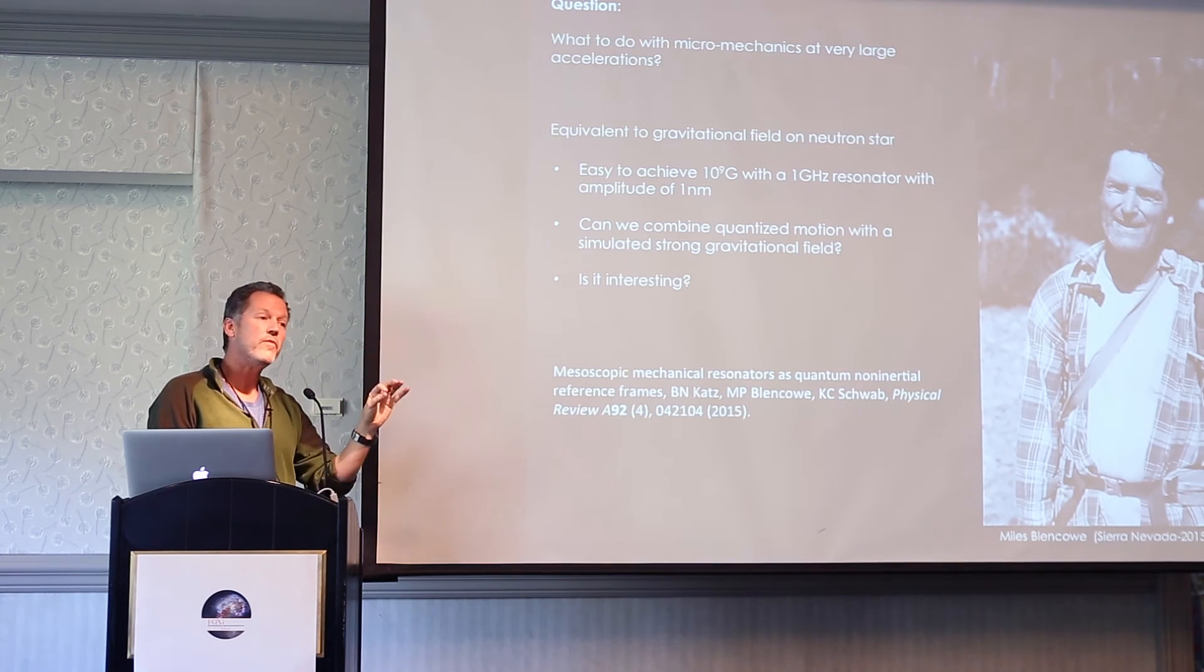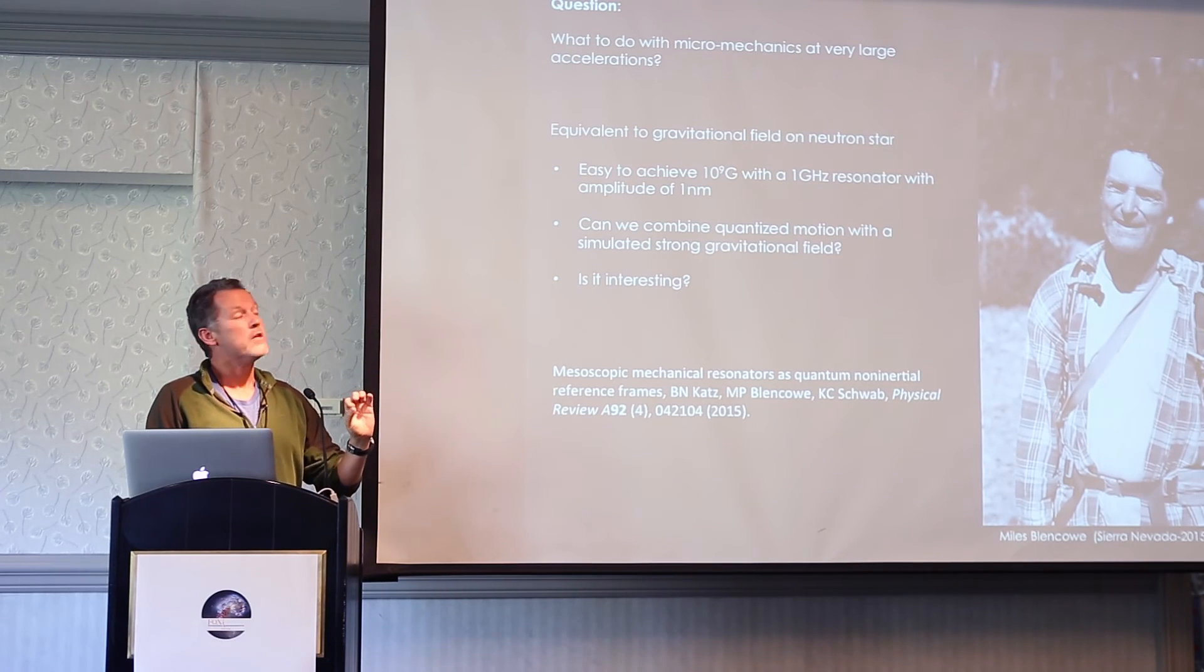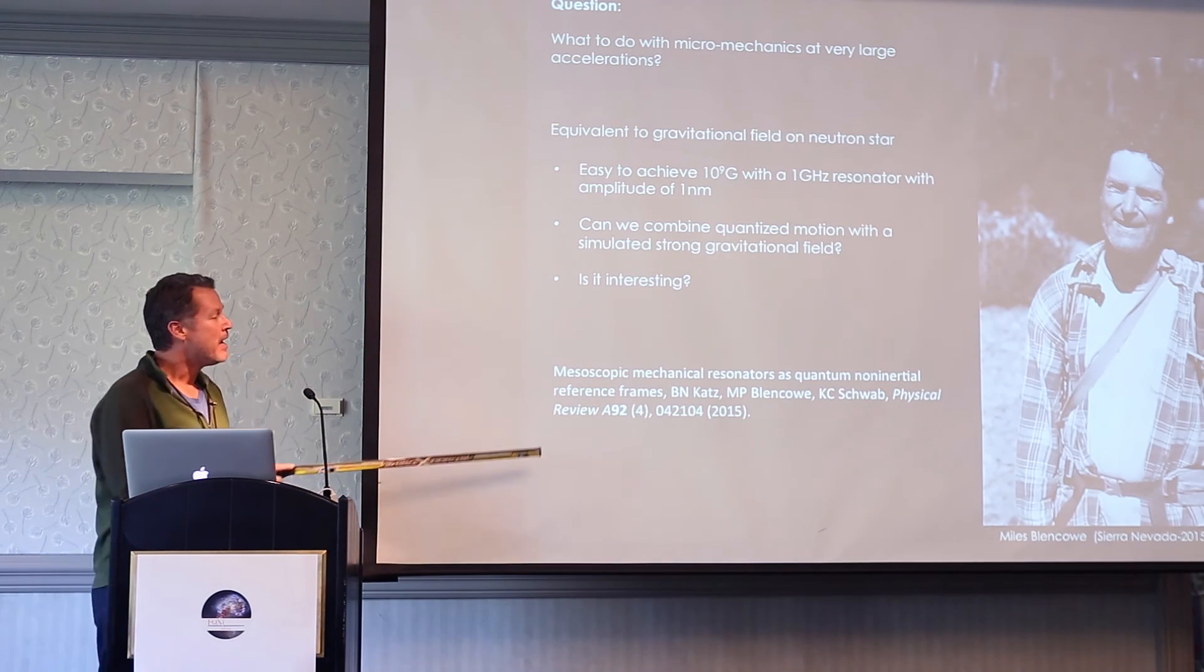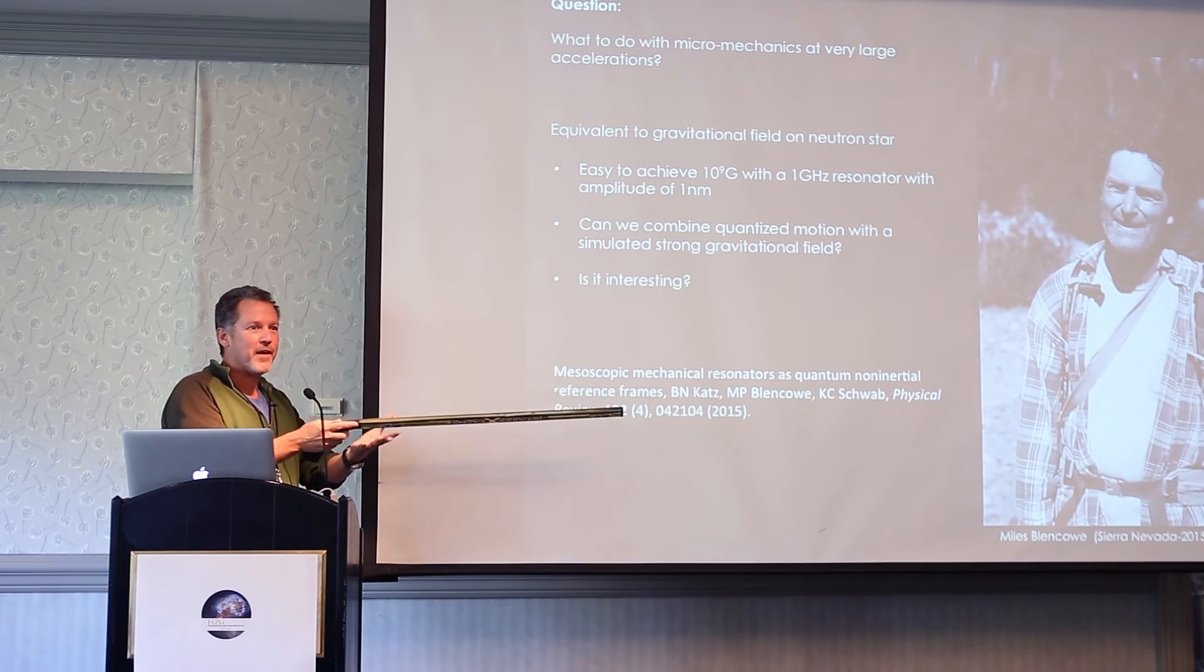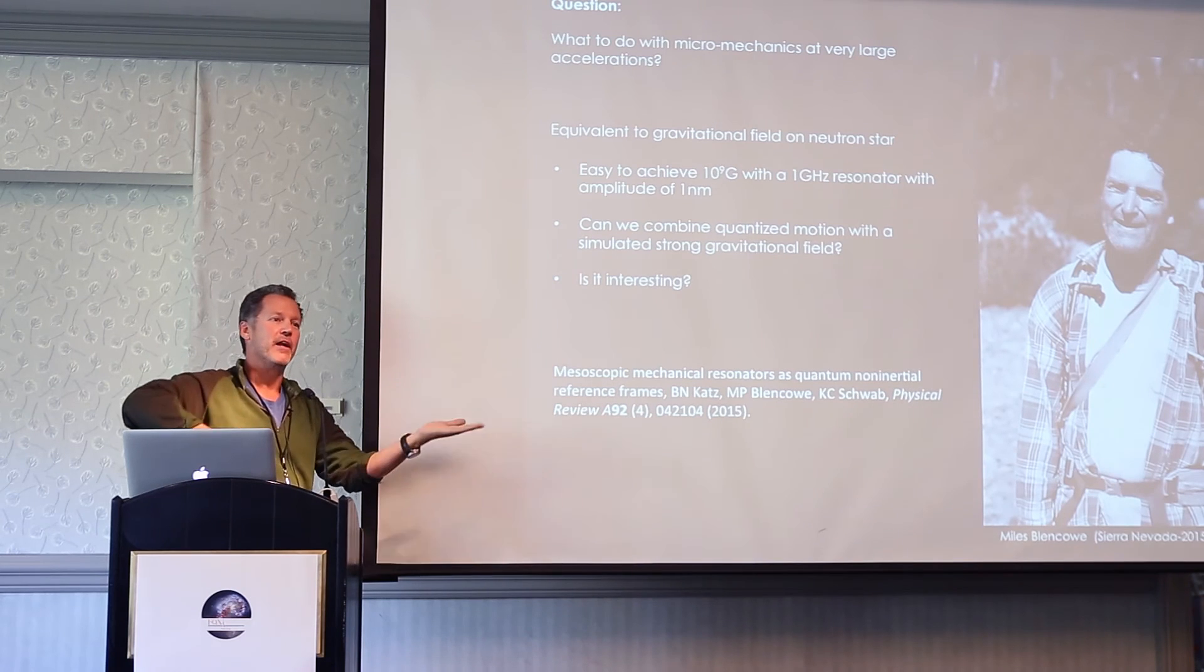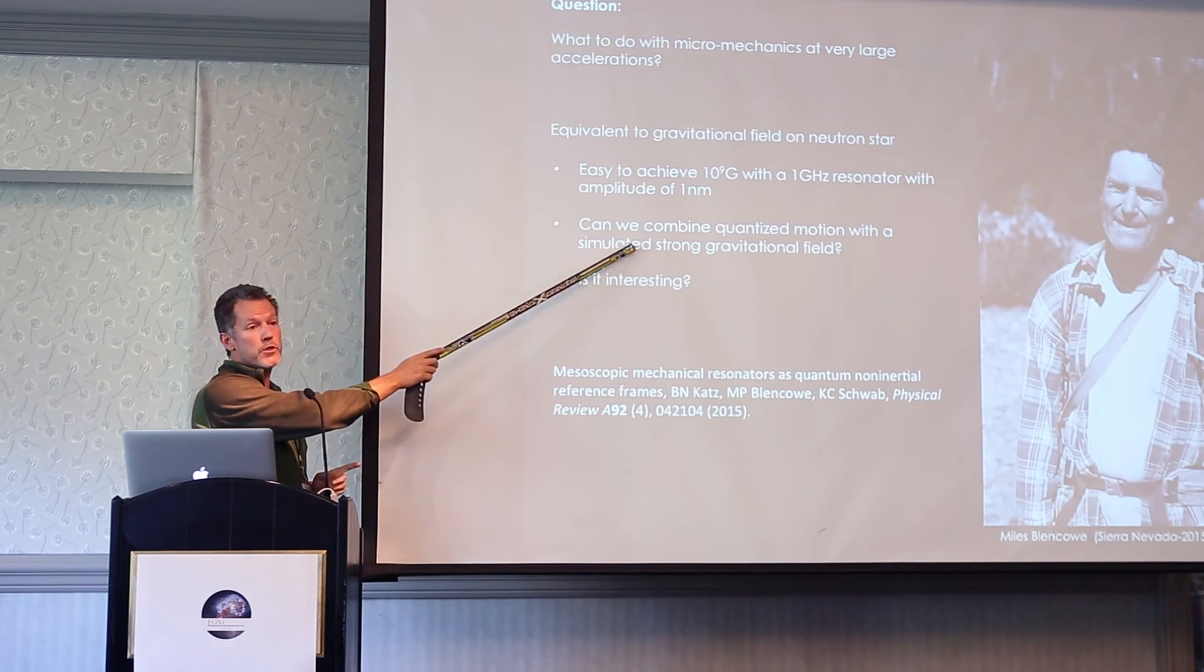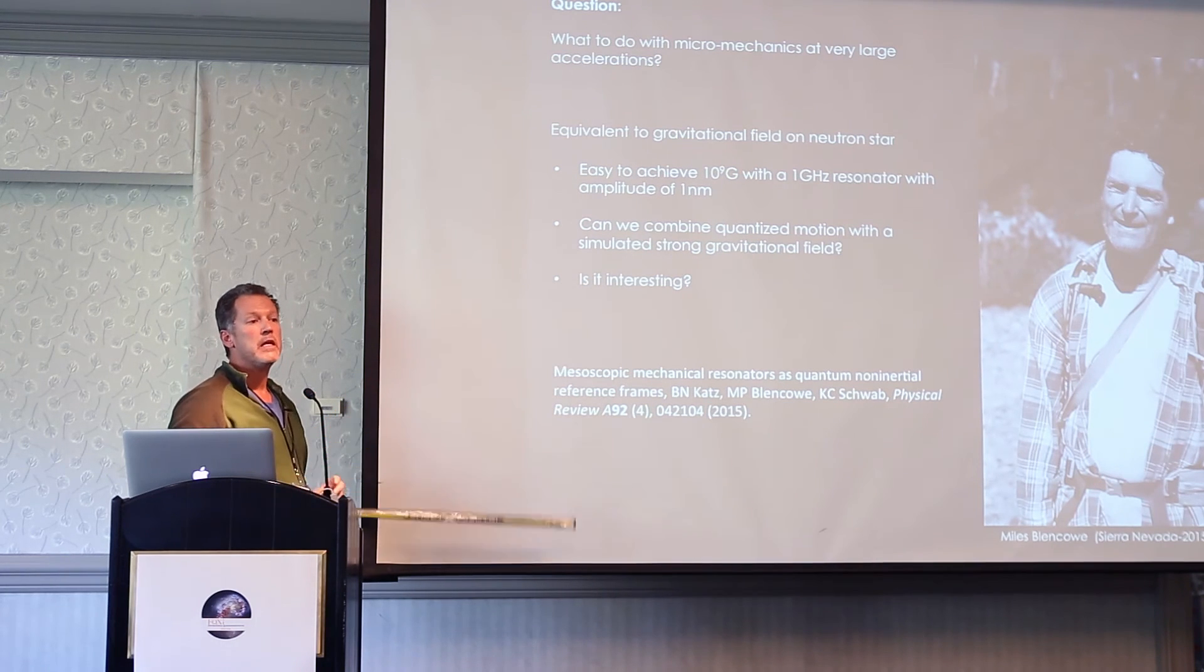Accelerations that are equivalent to gravitational fields on the surface of a neutron star. So what do you do with that? I don't know, that's for you guys to decide. Miles and I, we're just thinking about stuff. He was looking at phase shifts you would get in rings if one arm was really vibrating. There's got to be some cool stuff that can be done in this regime. This is an unexplored regime in this kind of physics that I think would be really fruitful to head to.